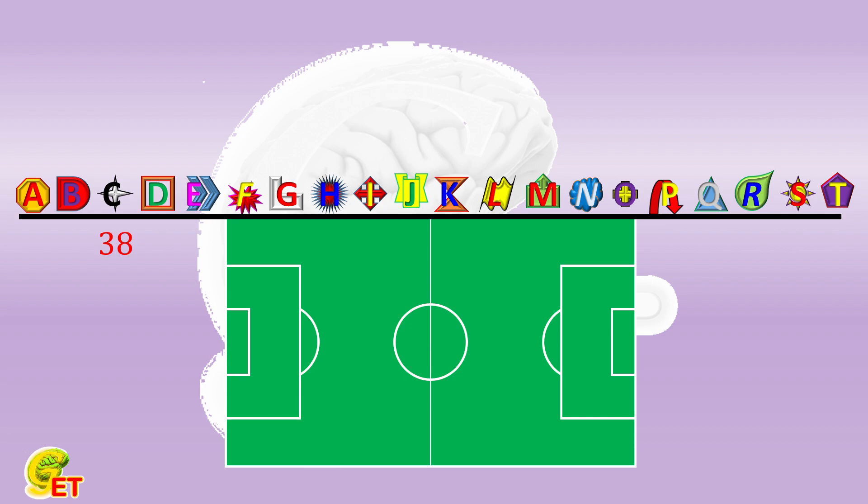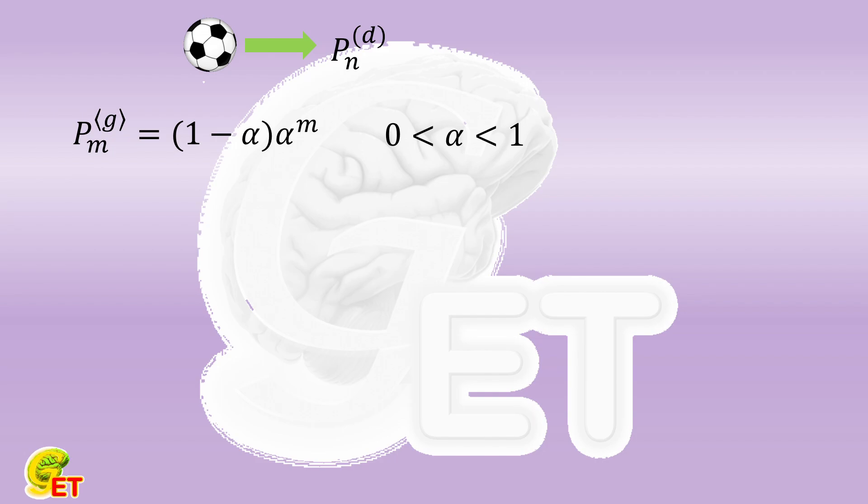In the last video, we estimated the probability from various perspectives. And in the last estimation, we assumed that the probability of a team scoring m goals in a game is equal to (1 - α)α^m.